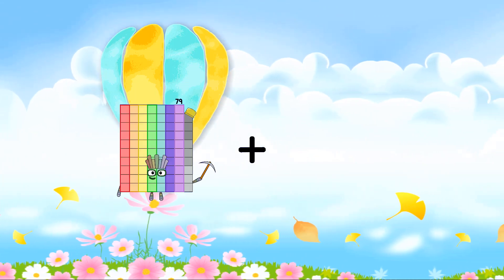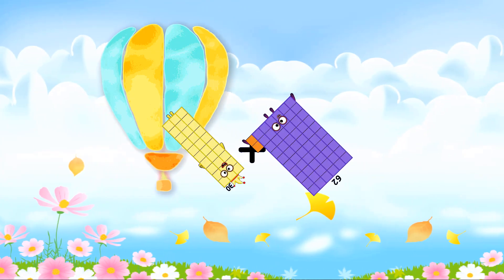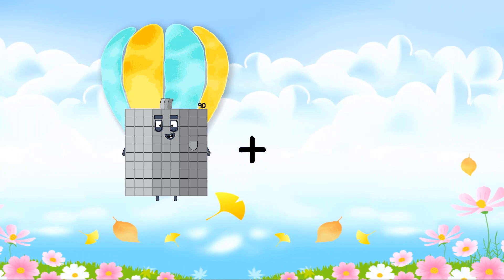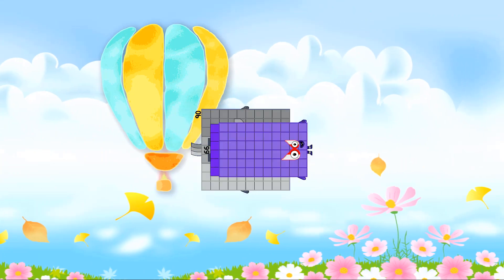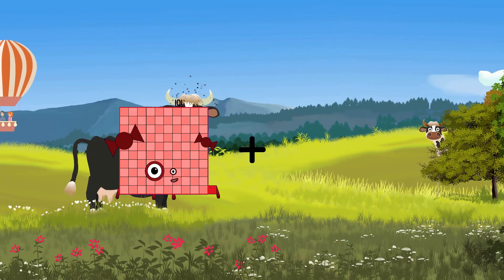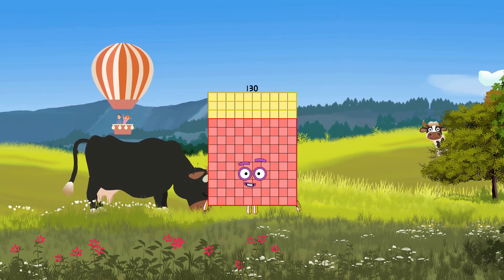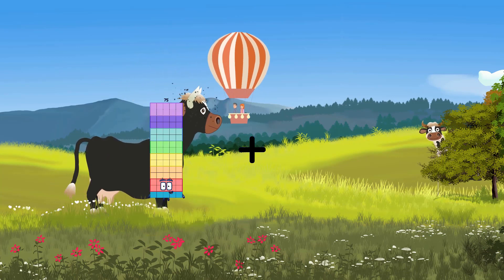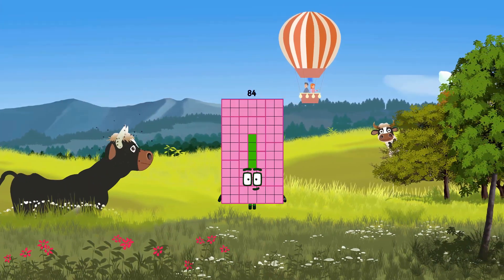30 plus 62 equals 92. 90 plus 66 equals 156. 101 plus 29 equals 130. 75 plus 9 equals 84.